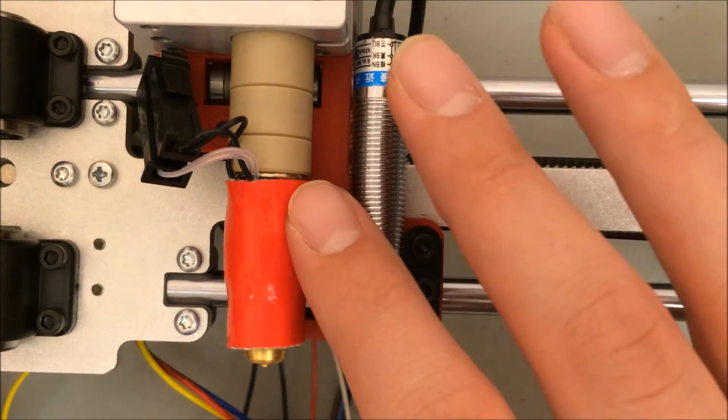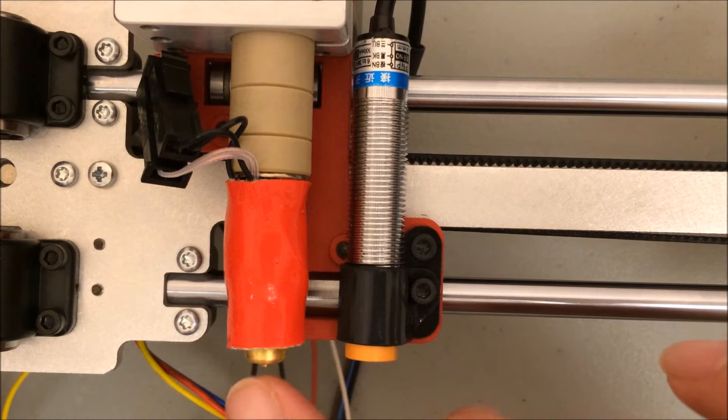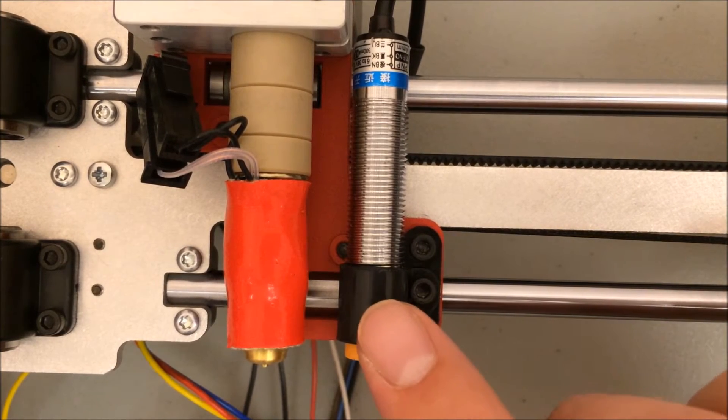It's also called an induction sensor because it detects the metal bed through induction. It's positioned next to the hot end. The hot end is actually a little bit lower. The tip of the hot end gets very close to the bed while the induction sensor is a little bit higher.